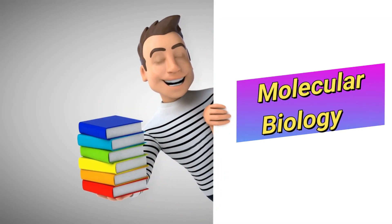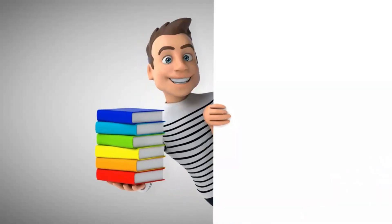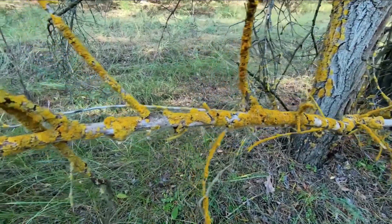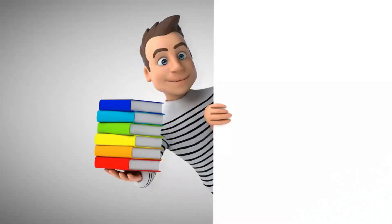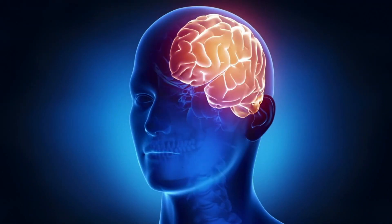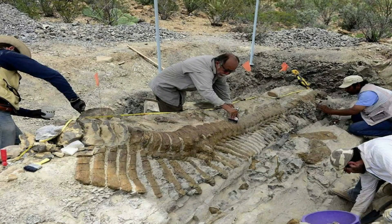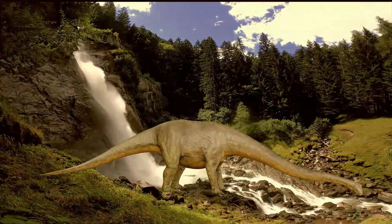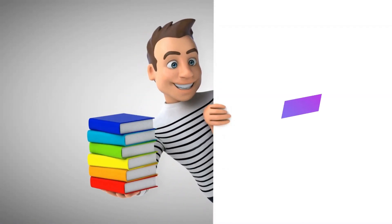The next branch is molecular biology, which deals with the structure and function of biological macromolecules like proteins and nucleic acids. The next branch is mycology — the scientific study of fungi, dealing with the good and bad effects of fungi, their structure, and their function. The next branch is neuroscience, which deals with the structure and function of the nervous system and brain. The next branch is paleontology, concerned with fossil animals and plants like dinosaurs that existed prior in the world.